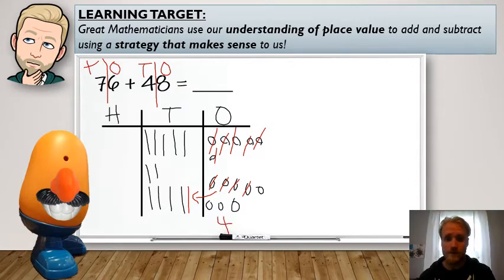All right. So let's now move over to the tens place and add them up. All right. One, two, three, four, five, six, seven, eight, nine, 10, 11. Don't forget that the new one, 12. All right. I've got 12 tens. So what do I have to do this time?